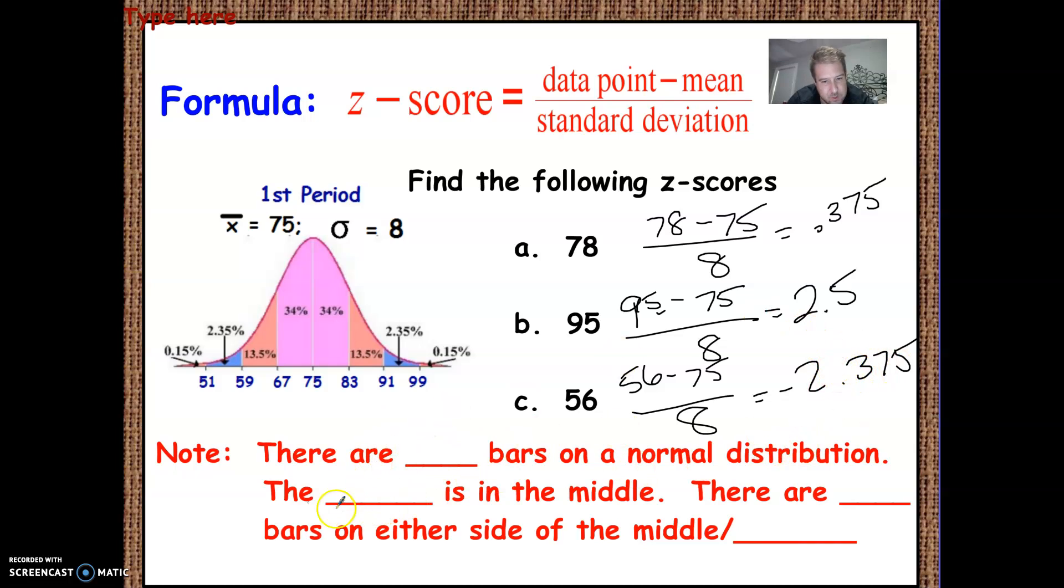So there are 8 bars in the normal distribution. The mean is in the middle, or median is in the middle. The mean, median, and mode are in the middle. There are blank bars on either side. So there's 4 bars on either side of the middle, which is the mean or median.